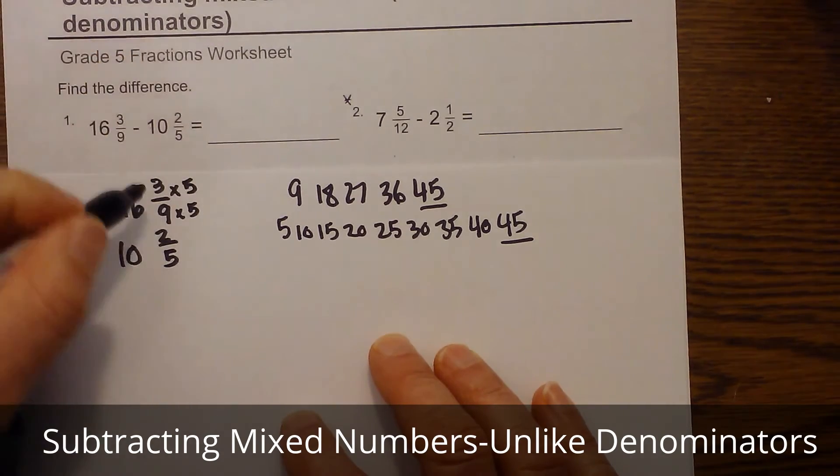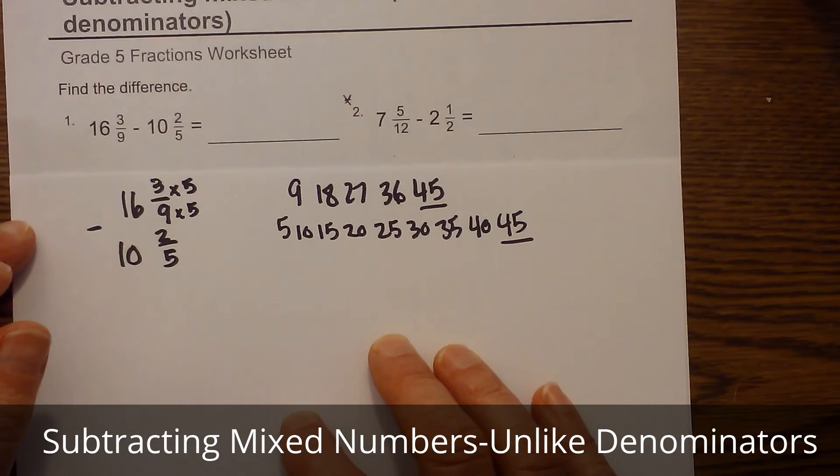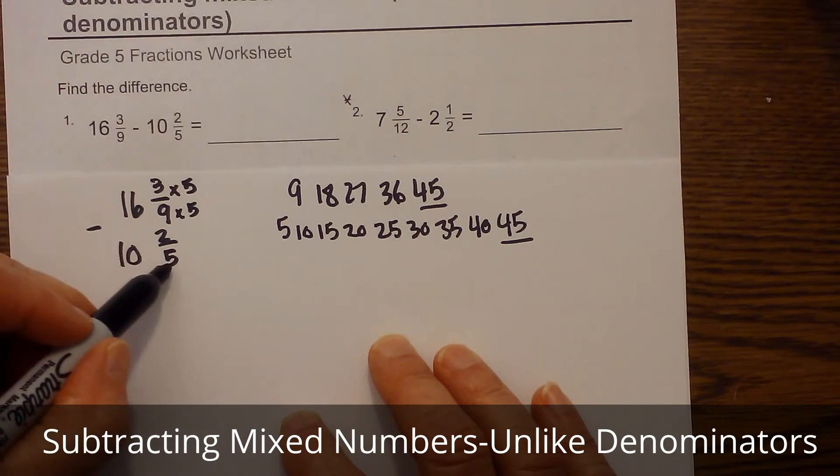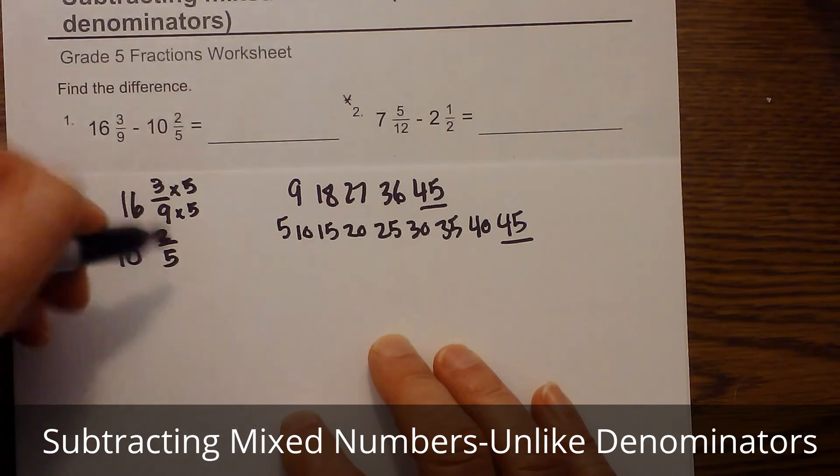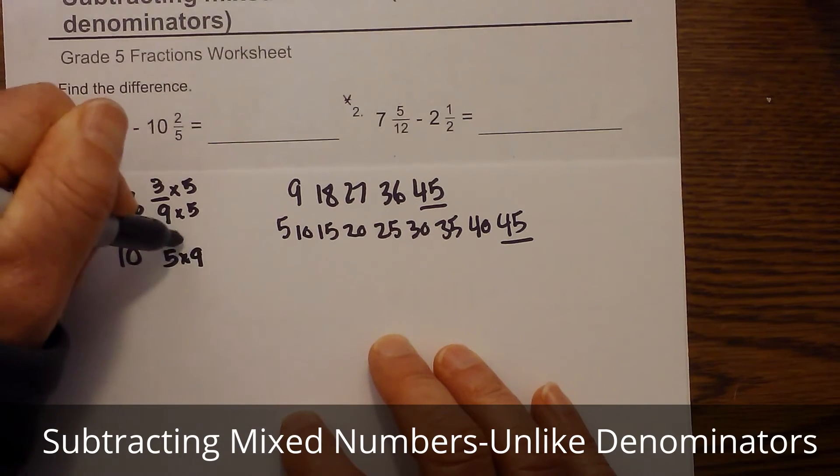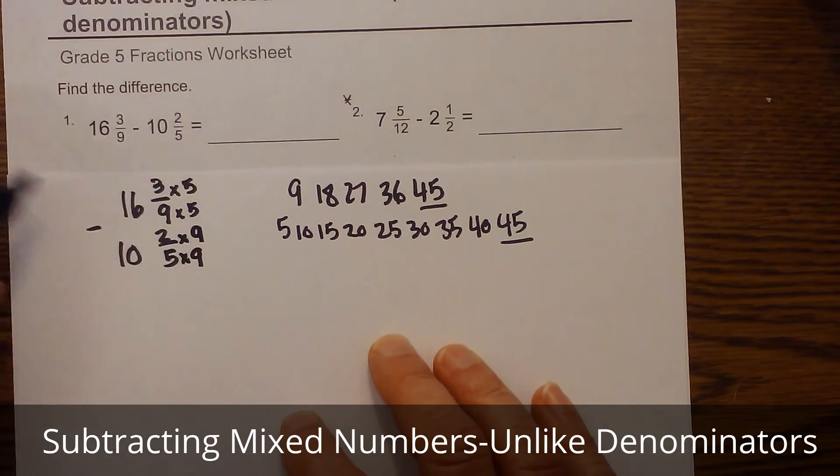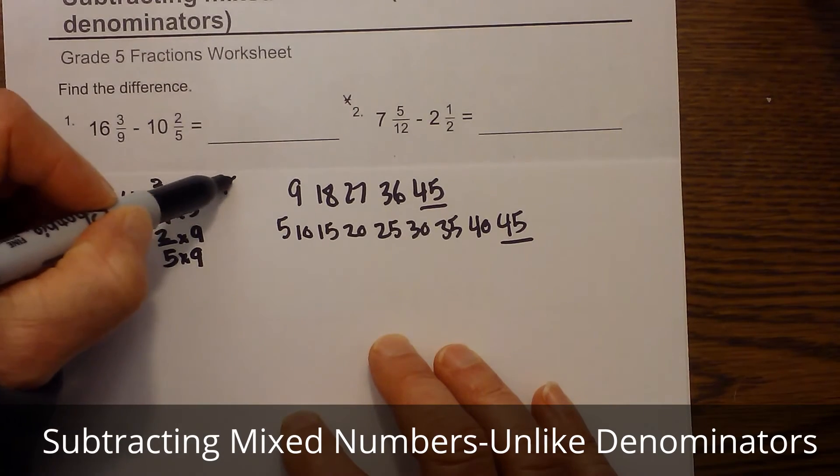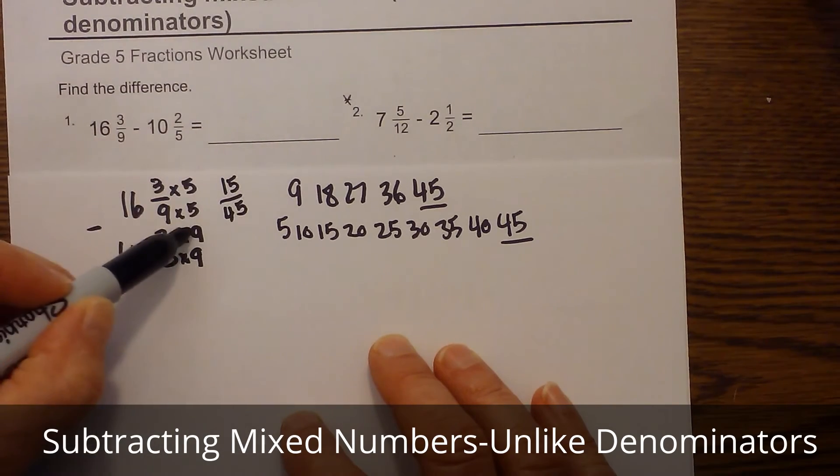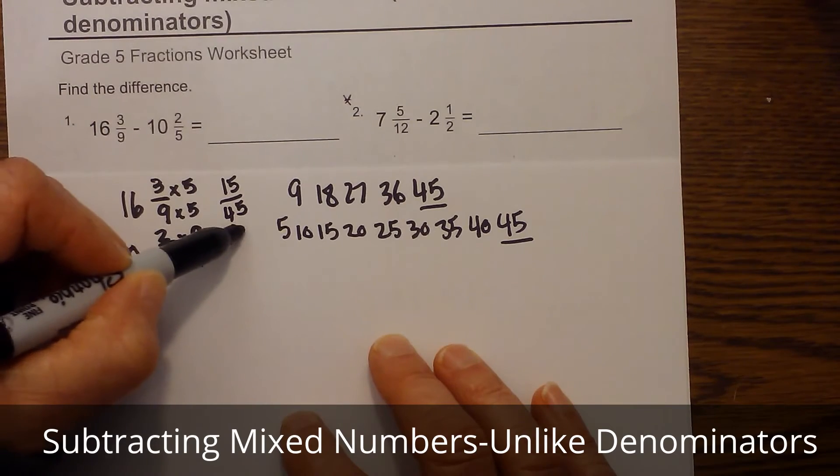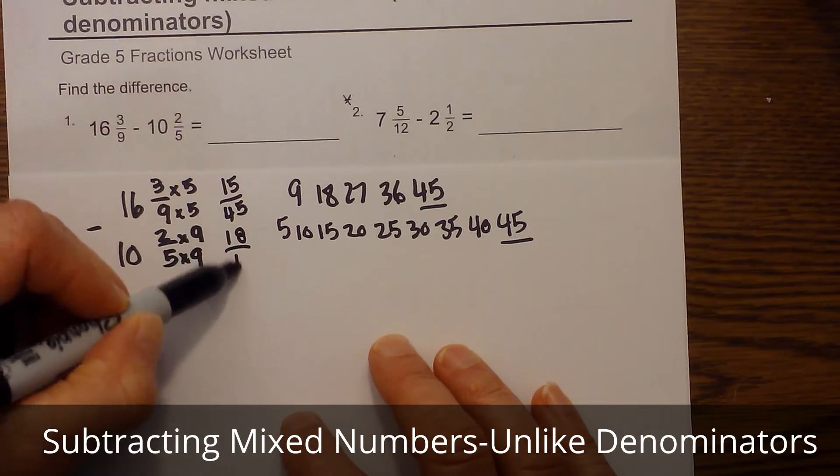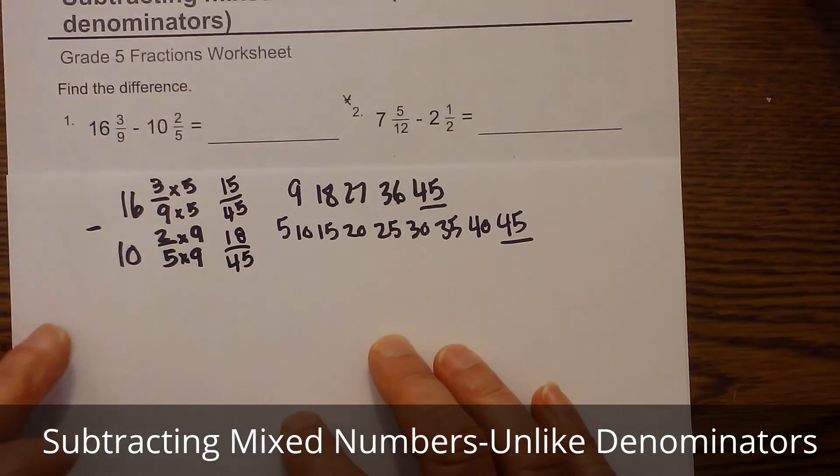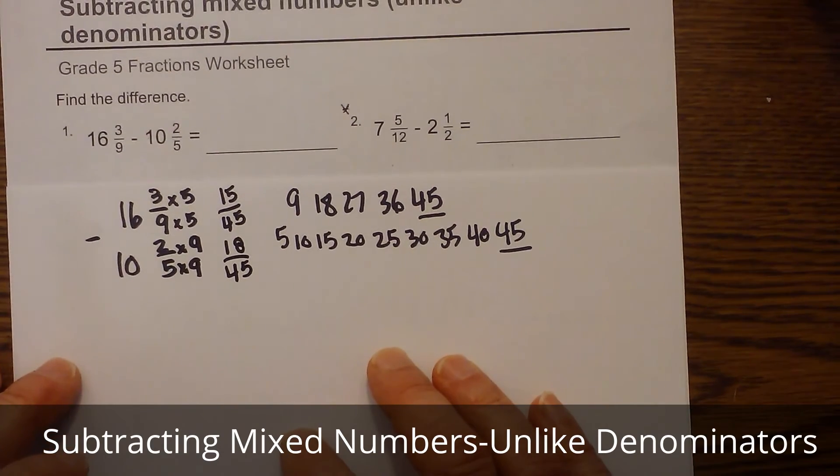So I multiply the numerator and denominator by five, and then five goes into forty-five nine times. Okay, so now let's see what we get. We have three times five is fifteen over forty-five, and nine times two is eighteen over forty-five. Okay, so now we have a bit of a challenge.